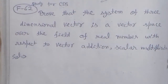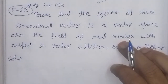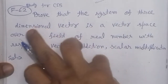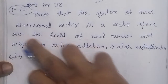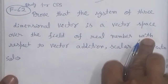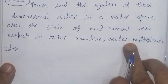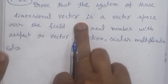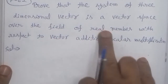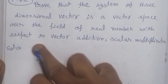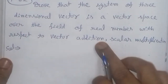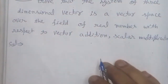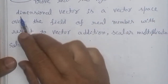Bismillahirrahmanirrahim. On the demand from idea study for CDS, on my first YouTube channel, we will prove that the system of three dimensional vectors is a vector space over the field of real numbers with respect to vector addition and scalar multiplication. Here is the problem and its solution.